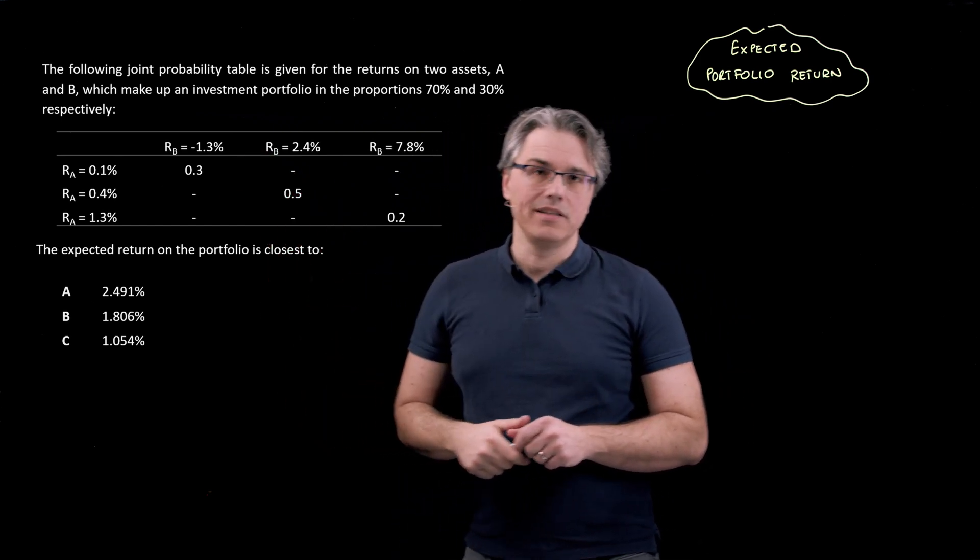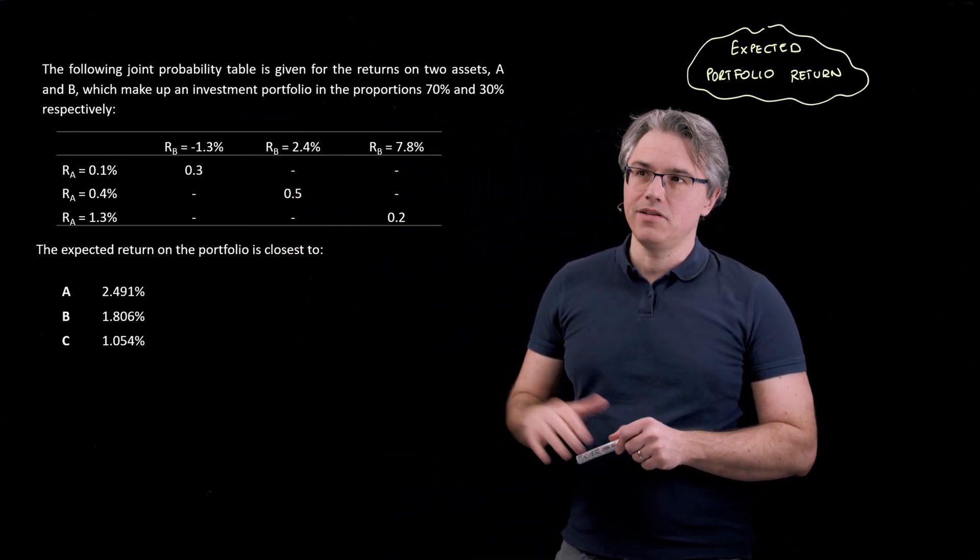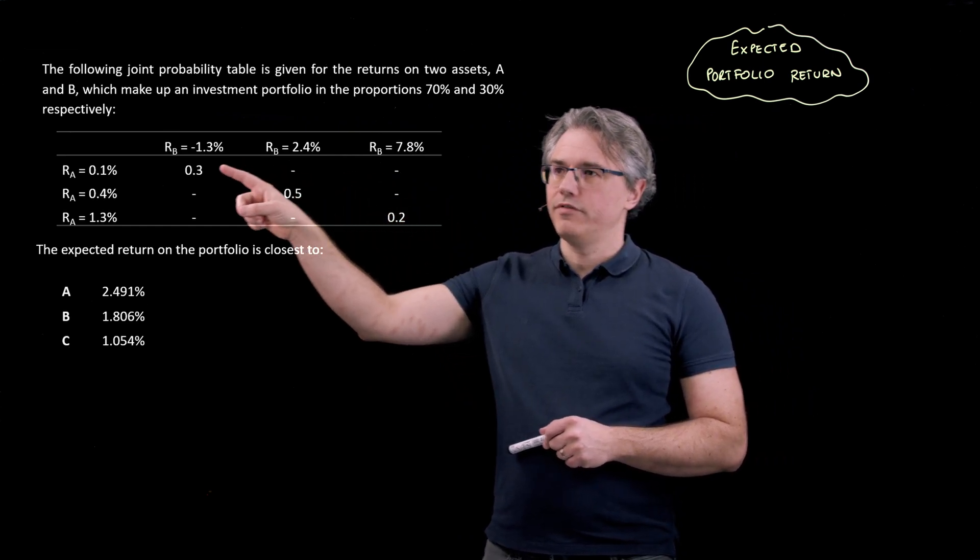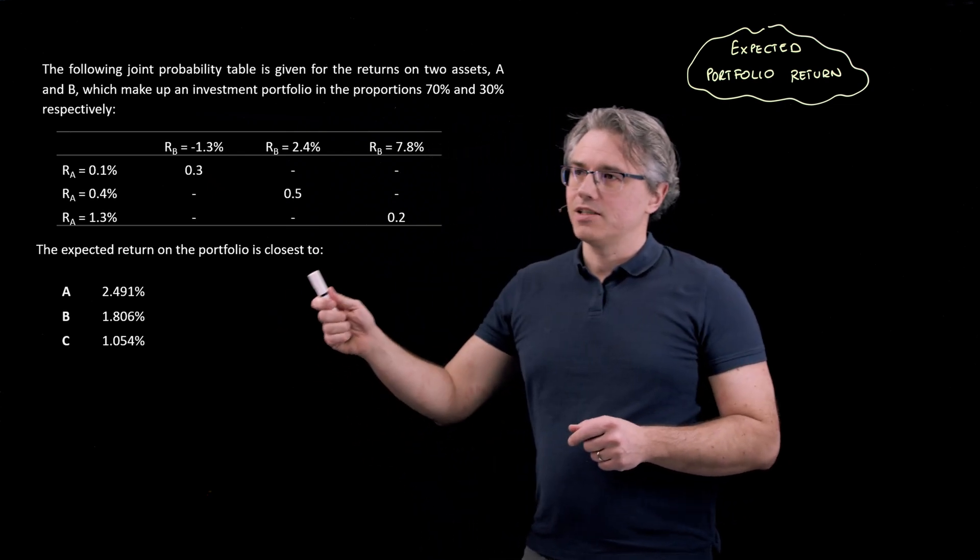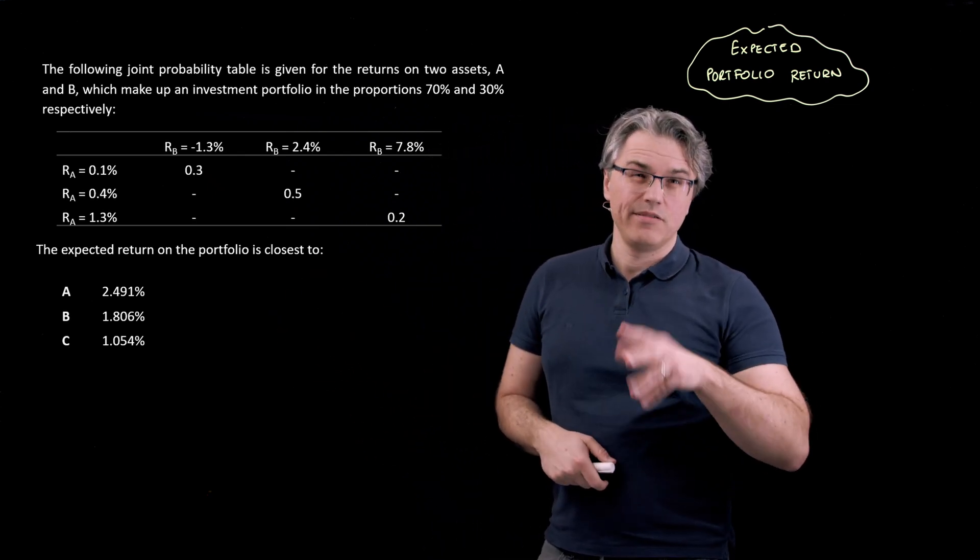So what you've got in the middle is those joint probabilities, which when you add them up to 0.2, 0.5 and 0.3, they give 1 or 100%. Now, the expected return on the portfolio is closest to, as I said, this is a relatively easy question.